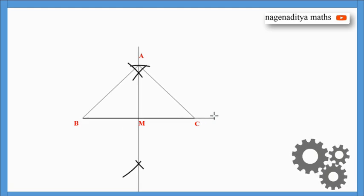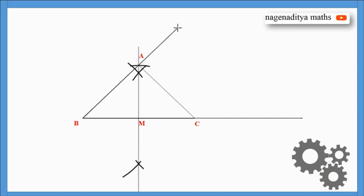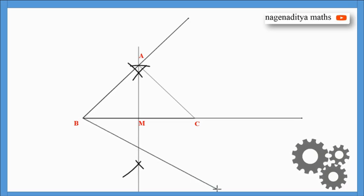Now we have to draw the similar triangle with the scale factor 1 and 1/2 times, that is 3/2 times of the given triangle ABC. So for that, first we have to extend the lines BC and BA, then draw an acute angle from point B.